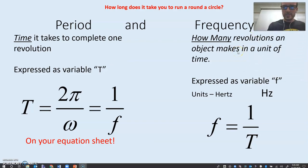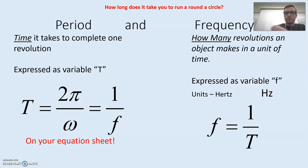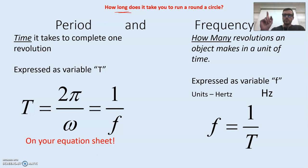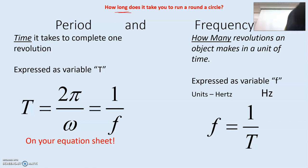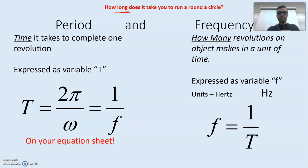The first thing we need to know is some circular definitions. How long does it take you to run around a circle? We call this the period — it's the time it takes to complete one revolution or one circle, expressed as the variable big T. So if you see big T on your equation sheet, that's going to represent the period. You'll see those on your AP Physics equation sheet towards the bottom.